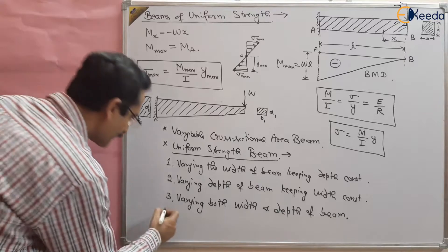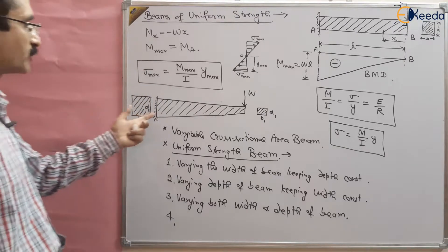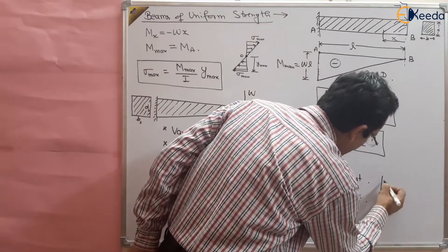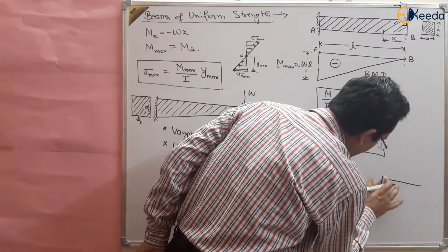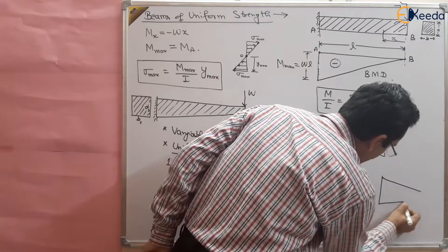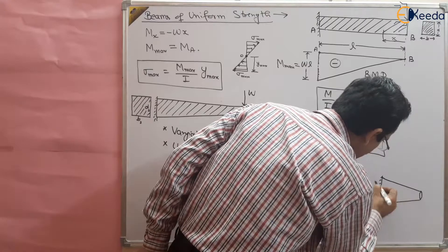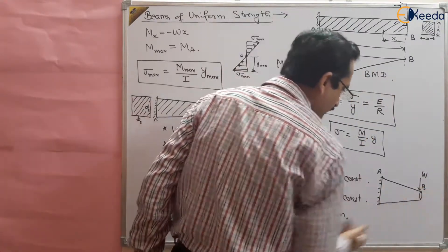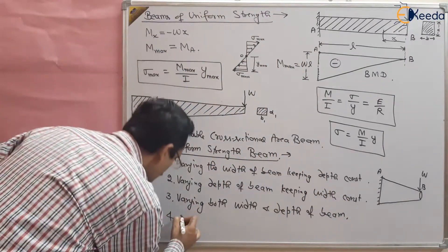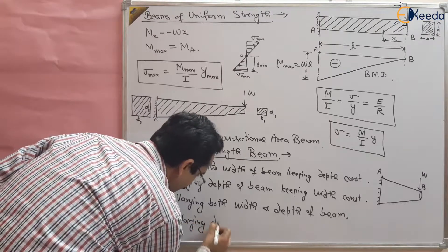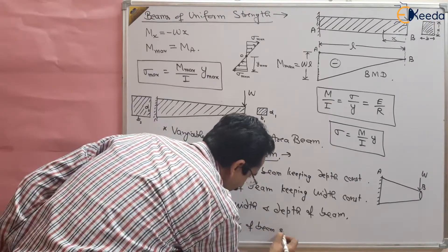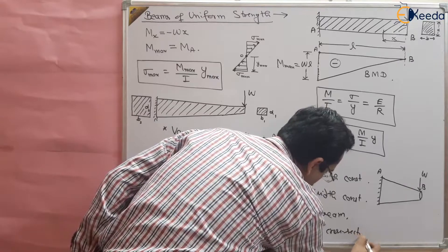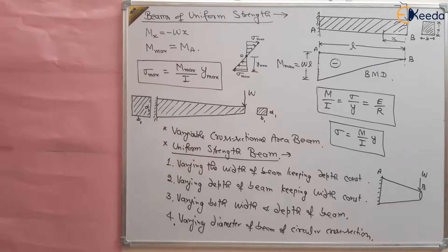We can vary both width and depth of the beam. Fourth, if the cross-section is circular, we can change the diameter of the beam. For a circular beam, we can keep a larger diameter at the fixed end and a smaller diameter at the free end. This gives a varying diameter circular beam of uniform strength.